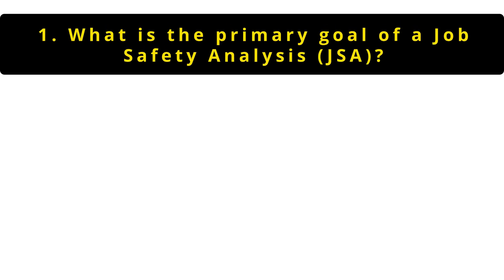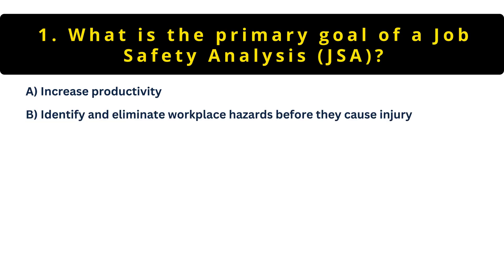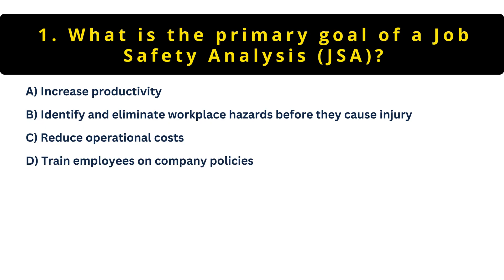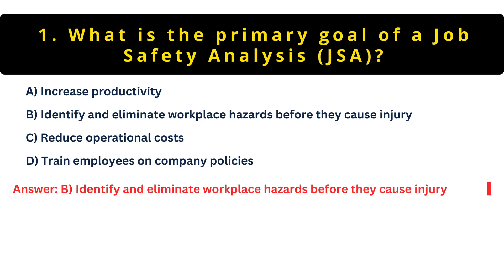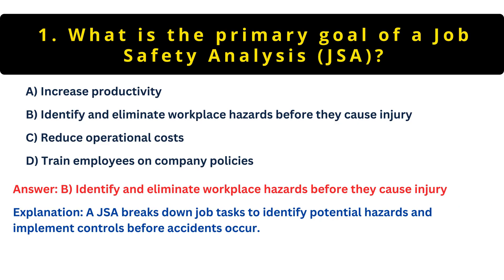What is the primary goal of a job safety analysis, or JSA? Option A: Increase productivity. Option B: Identify and eliminate workplace hazards before they cause injury. Option C: Reduce operational costs. Option D: Train employees on company policies. The correct answer is B — identify and eliminate workplace hazards before they cause injury. A JSA breaks down job tasks step by step to spot potential dangers and implement controls before accidents happen. It's all about prevention.